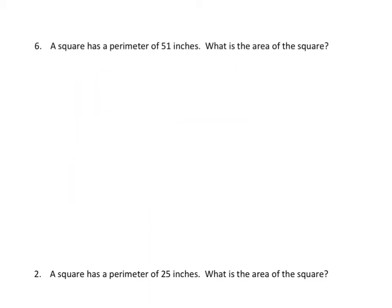On this slide, we have two problems. One is from the practice set, and the other is from the homework, but they're very similar. In both cases, we have a square. In both cases, we are given a perimeter. And in both cases, we have to find the area of the square. Let's begin. A square has a perimeter of 51 inches. What is the area of the square?